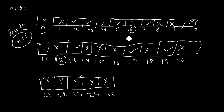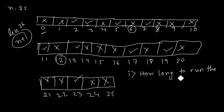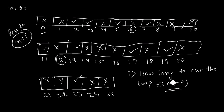We take one number and keep marking its multiples. Now there are two key optimizations. The first question is: how long should we run the loop? If we check all numbers and mark their multiples, it will be almost O(n²), which we cannot afford. So is there a smarter way?